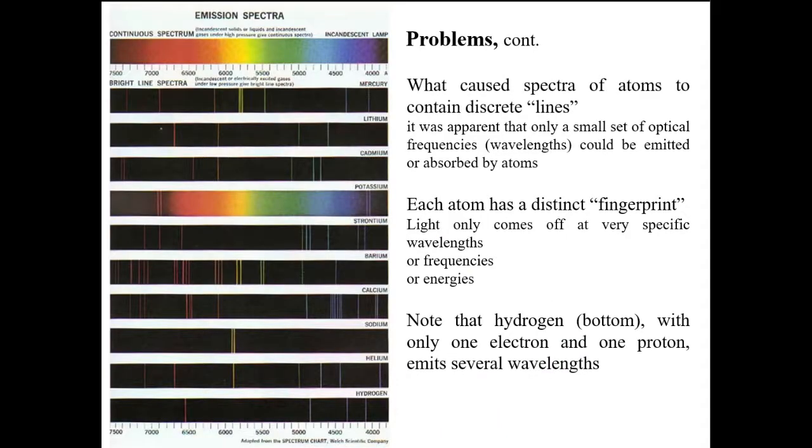Let us talk about one more crisis in classical mechanics. And it is the discrete spectra of atoms which is the signature of each atom. Classically, the discreteness of atomic spectra is not possible and this was another hit on classical mechanics.